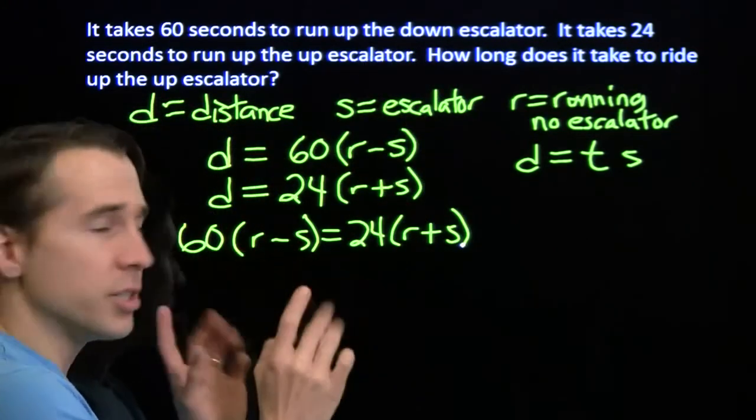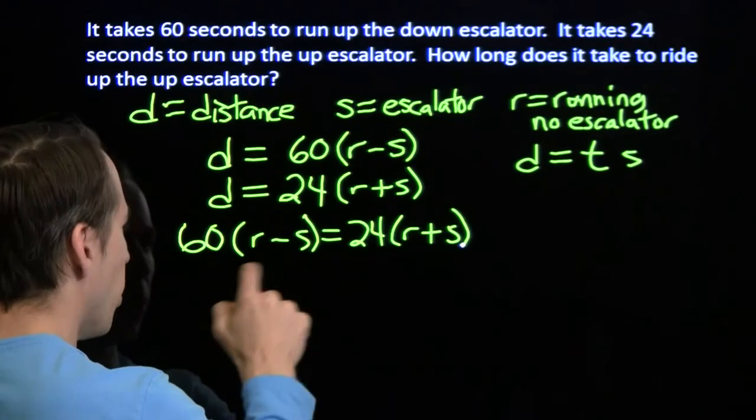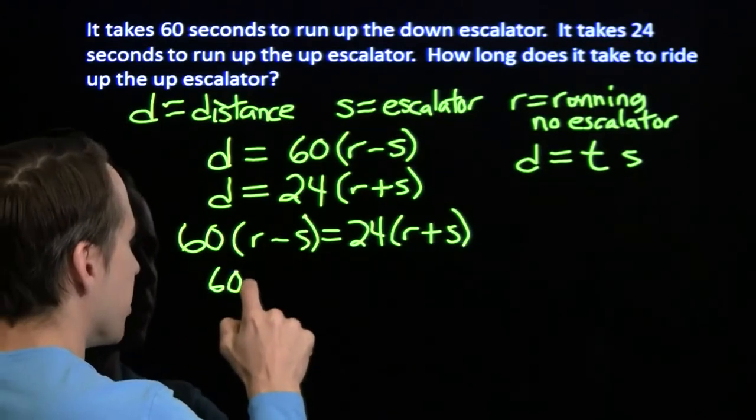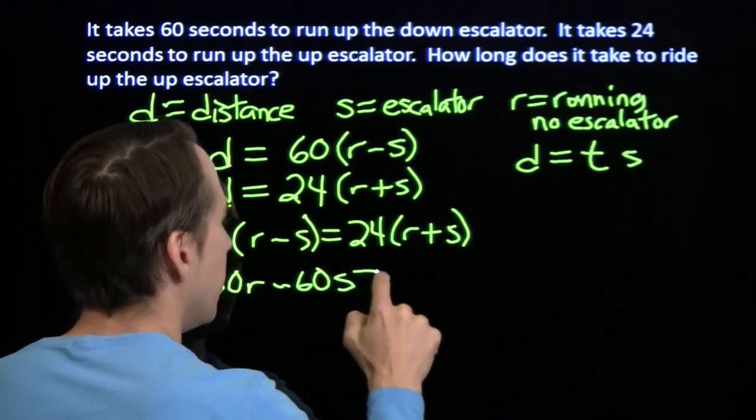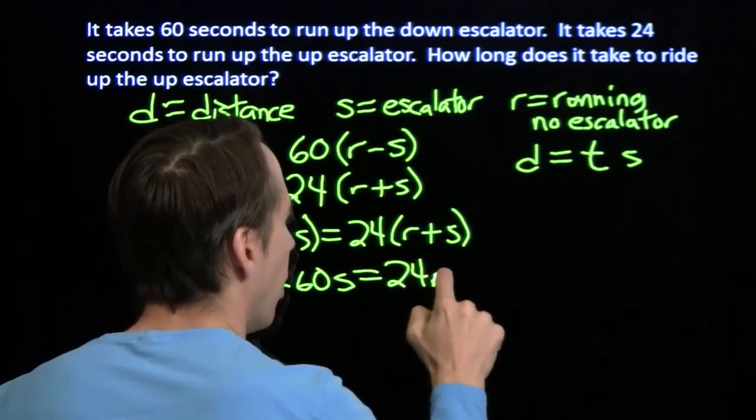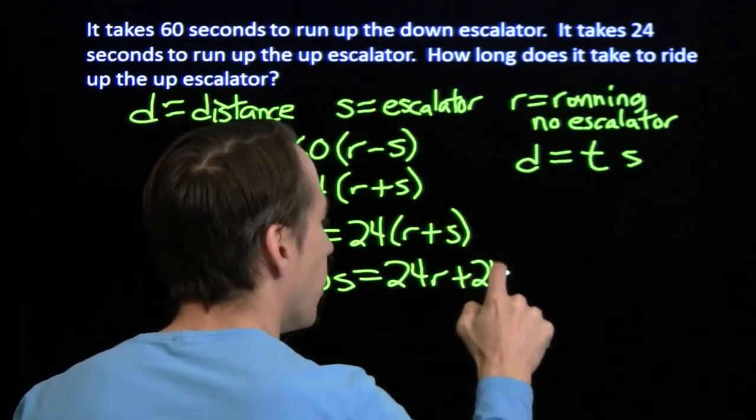Now, we turn all these words into equations. You know how to work with equations. We'll expand both sides here. 60r minus 60s equals 24r plus 24s.